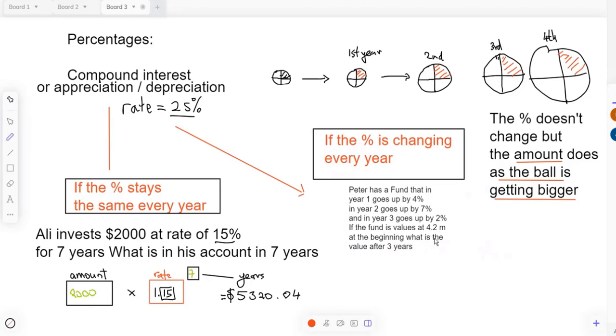For this one, you've got a fund value of 4.2 million. I'll just put pounds here. So you take your amount or value, so 4.2. I don't need to write all the zeros for millions, we'll just do it in terms of 4.2M. And then for the first year it goes up by 4%, so I'll times it by 1.04.